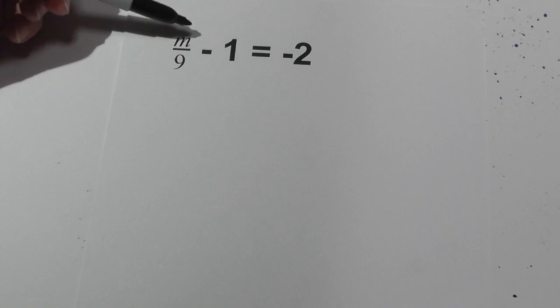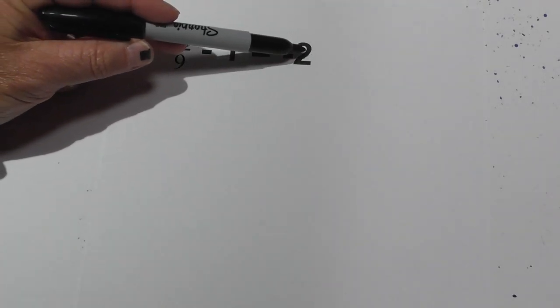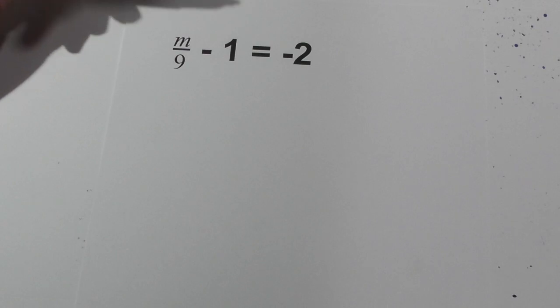The goal is to get the variables on one side and the constants or numbers on the other side. Let's get started.